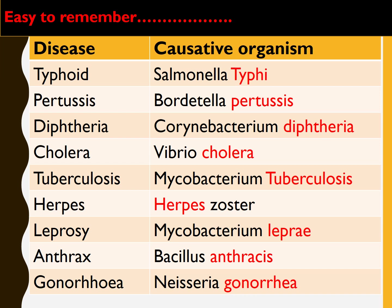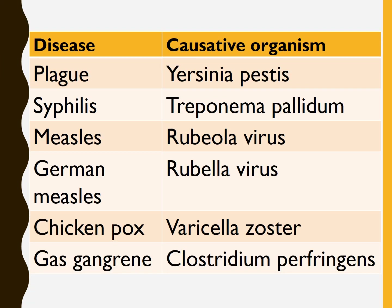Typhoid is caused by Salmonella typhi. Pertussis is caused by Bordetella pertussis. Diphtheria is caused by Corynebacterium diphtheriae. Cholera is caused by Vibrio cholerae. Tuberculosis is caused by Mycobacterium tuberculosis. Herpes infections are caused by Herpes zoster. Leprosy is caused by Mycobacterium leprae. Anthrax is caused by Bacillus anthracis. Gonorrhea is caused by Neisseria gonorrhoeae. Plague is caused by Yersinia pestis. Syphilis is caused by Treponema pallidum. Measles is caused by Rubeola virus. German measles is caused by Rubella virus. Chickenpox is caused by Varicella zoster. Gas gangrene is caused by Clostridium perfringens.